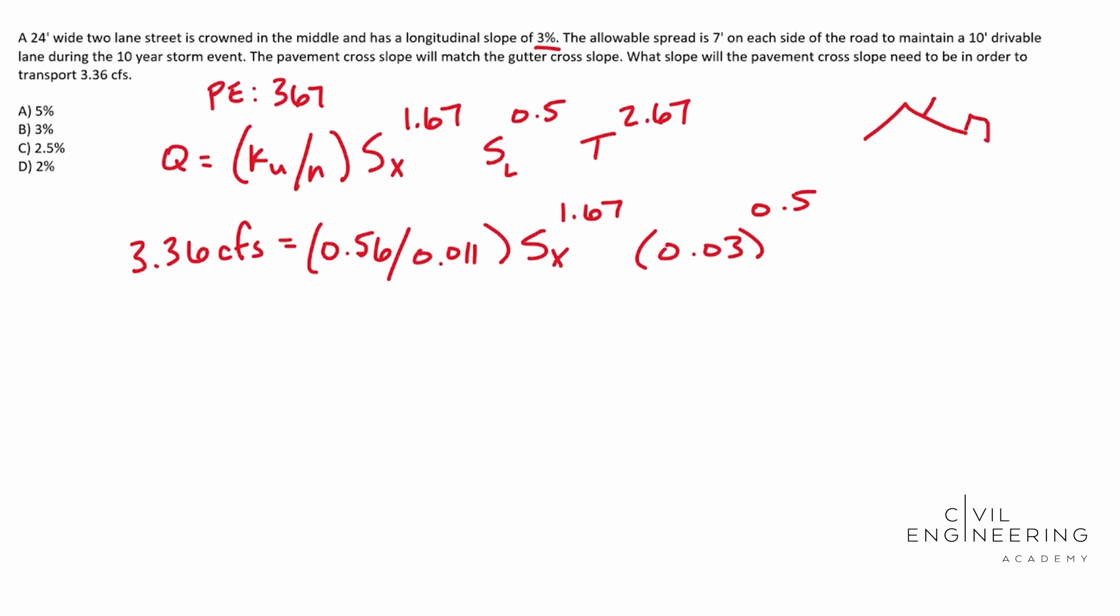It says our allowable spread is seven feet. So you can picture if you have an inlet right here collecting, we can't have water more than seven feet into our road, basically. So that's our maximum. So our spread is going to be seven feet, and we're going to raise that to the 2.67 power.